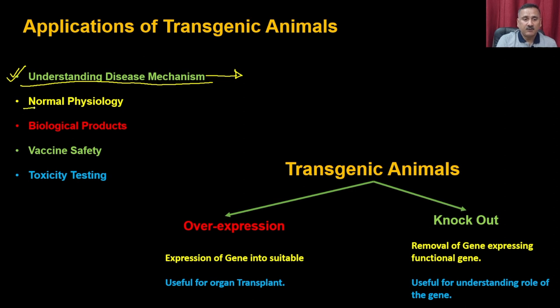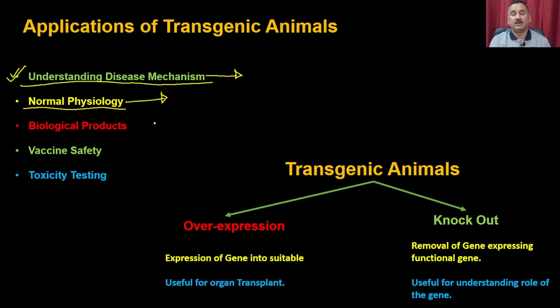Transgenic animals can also be used for studying normal physiology — how blood clotting works, how nerve conduction works, how muscle contraction works. All these mechanisms require different types of factors, so if you remove one or two factors it helps you understand the role of that particular factor. For example, removing actin, myosin, or crucial GTPases will tell you the function of those proteins.